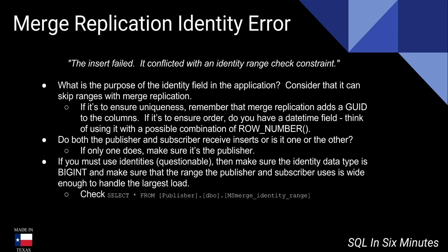If you must use identities — and this is very questionable, because most people are not using identities in the correct way and the reason can be achieved with other means — then first make sure the identity data type is bigint, and second make sure the range the publisher and subscriber use is wide enough to handle the largest load. If you're only getting two inserts a day, you wouldn't be getting this error. This error only occurs with large enough inserts, so you'll have to broaden your range. And understand it's going to skip values, so if you need it perfectly ordered, the identity field is not going to achieve that — which is why there are probably better alternatives.